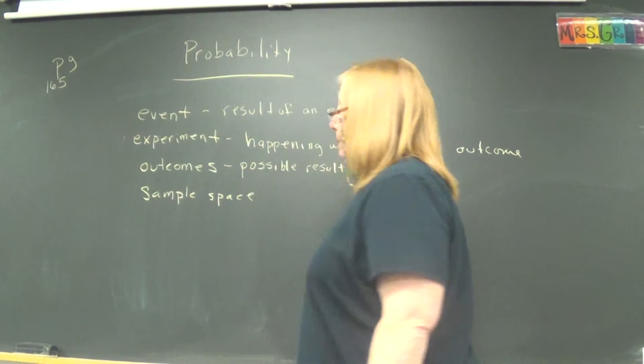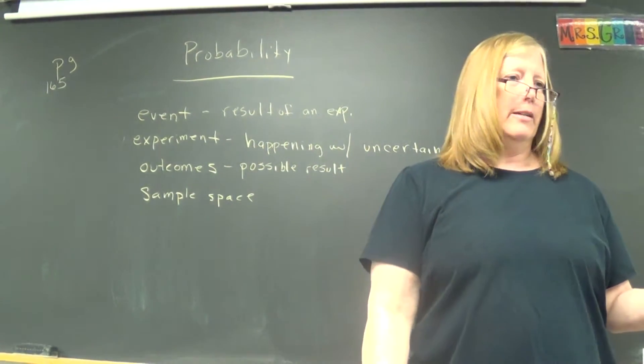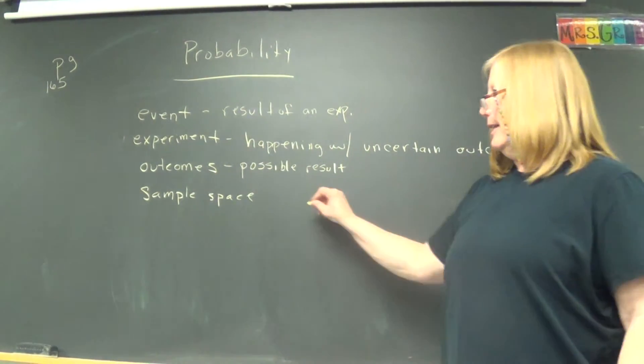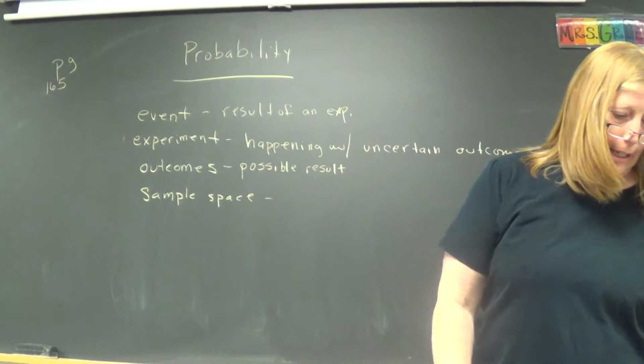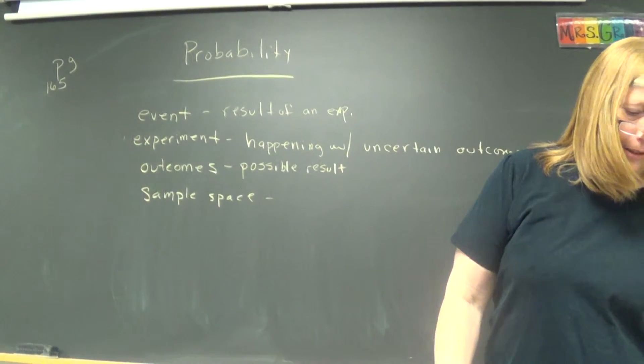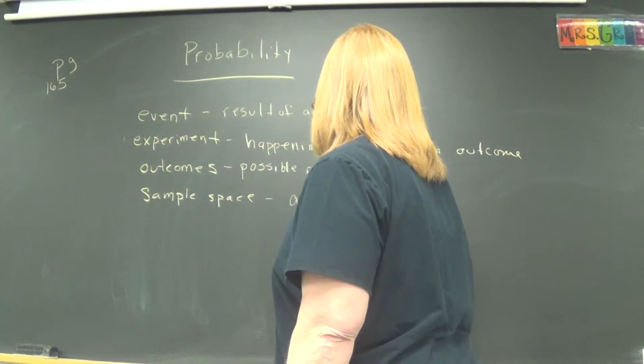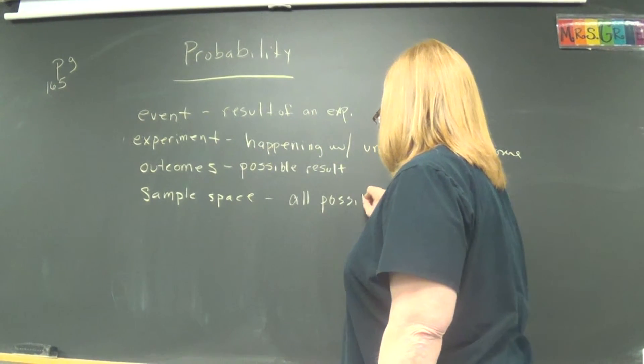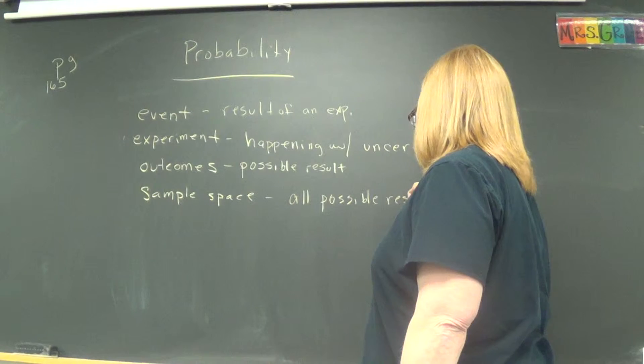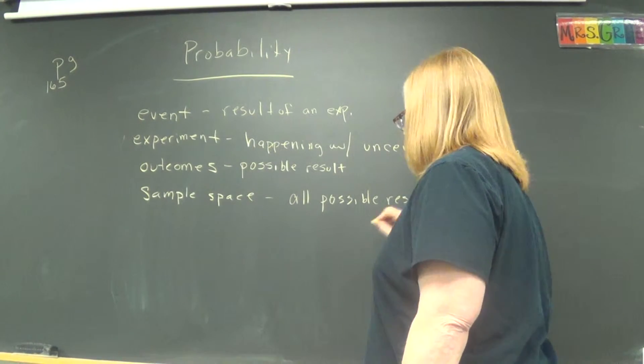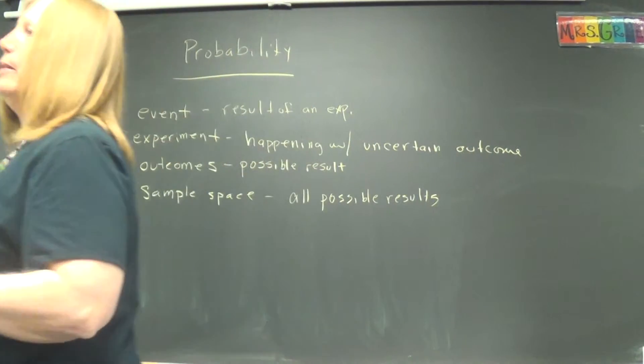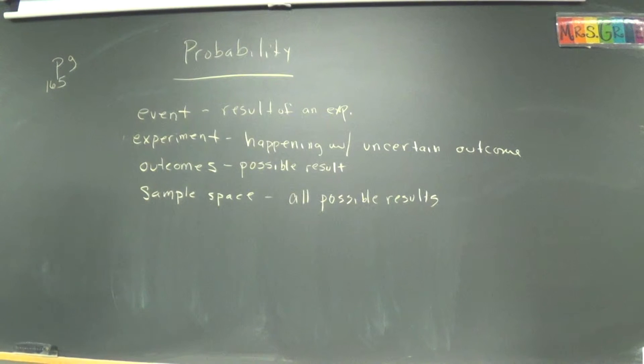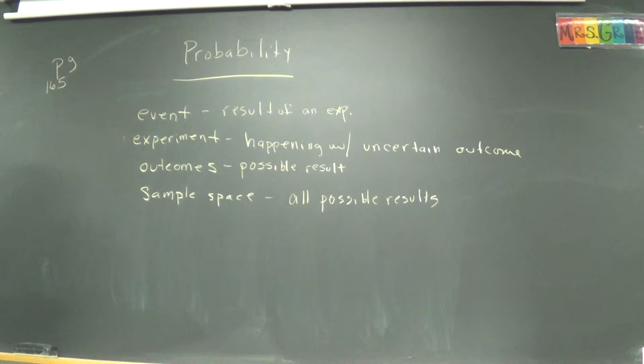All right. Well, what's an outcome? You see how these definitions depend on one another. Yep. And an outcome is sort of what its name implies. It's just a possible result. Like when you flip a coin, an outcome could be heads. And the sample space is the one that I'm most interested in. It's all possible results.